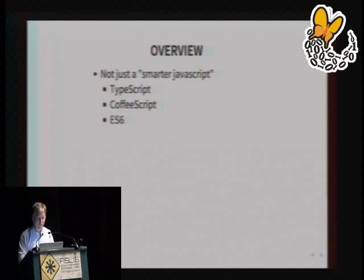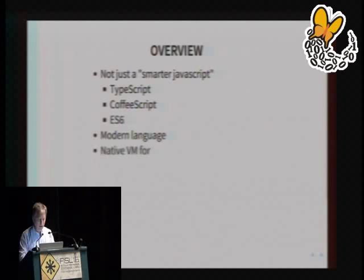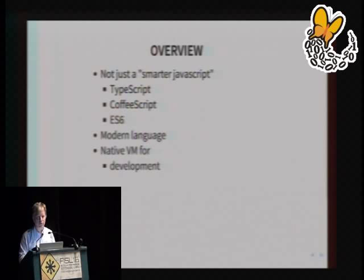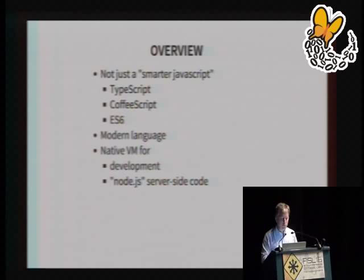These are all great, but they still suffer with backward compatibility with old JavaScript. All the things you've learned to hate about JavaScript over the years don't get fixed by these solutions. It's a modern language that looks a lot like Java or C++ or any of those other modern languages you may be familiar with. There's a native VM that compiles extremely fast and runs really fast, actually being built by the people who built the V8 JavaScript engine.